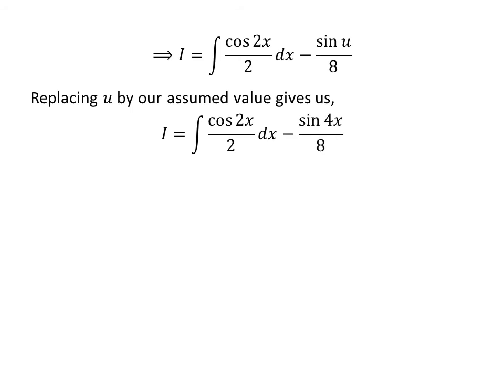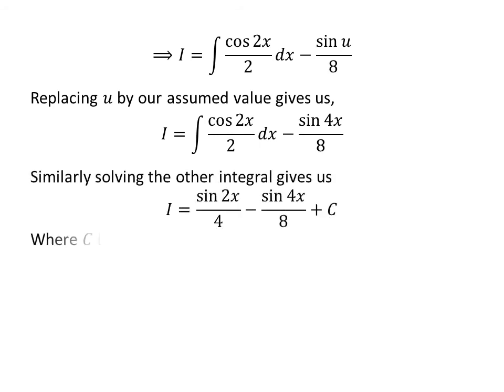Now, substituting u back by its assumed value 4x, we get I equal to the integral of cosine of 2x upon 2 with respect to x, minus sine of 4x upon 8. Similarly, solving the integral of cosine of 2x upon 2 with respect to x in the same way, we get I equal to sine of 2x upon 4 minus sine of 4x upon 8 plus capital C. Capital C is the arbitrary constant of the indefinite integral — never forget to add this constant at the end.